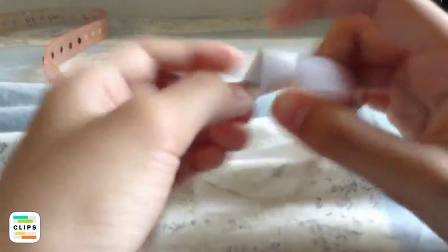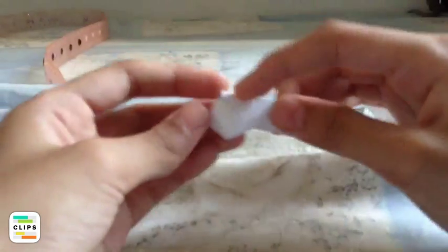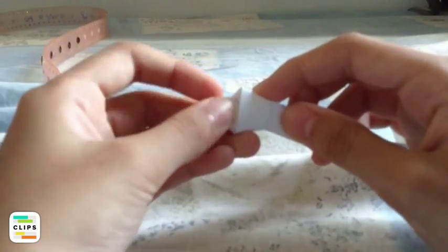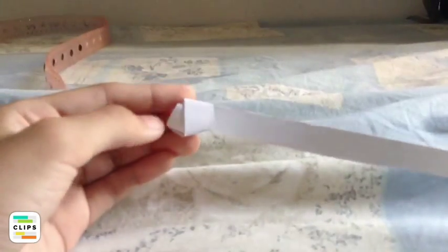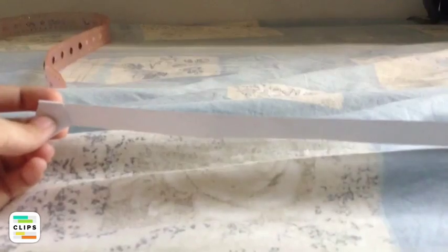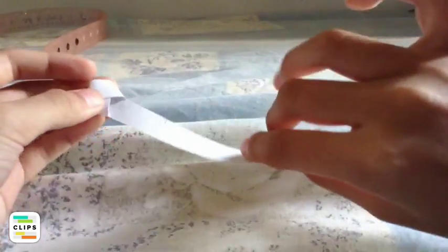And then insert the flap into the little pocket. You can see that pocket, insert the flap. Yeah, so you got your pentagon and an extra flap under the pentagon. And then you're gonna wrap around the pentagon.